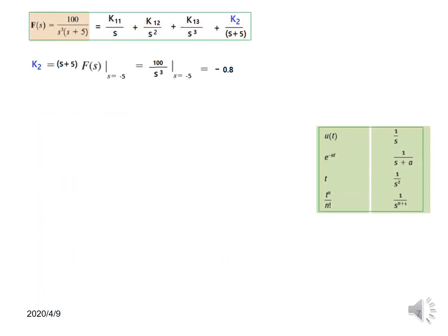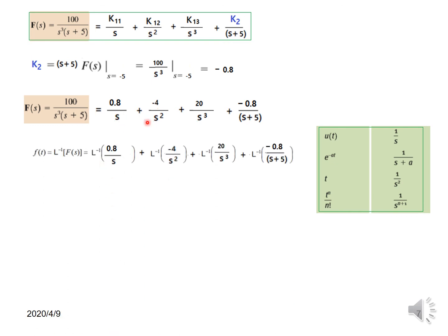For k2 we multiply by (s+5) and substitute F(s), getting 100/s³. The condition is s+5=0, so s=−5. Plugging in: 100/(−5)³ = 100/(−125) = −0.8, so k2=−0.8. With all values plugged in, this is the final form of F(s), and now we take the inverse Laplace of each term using the standard table.